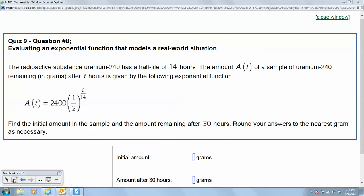Find the initial amount in the sample and the amount remaining after 30 hours. Round your answer to the nearest gram as necessary.